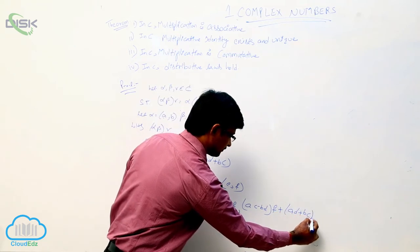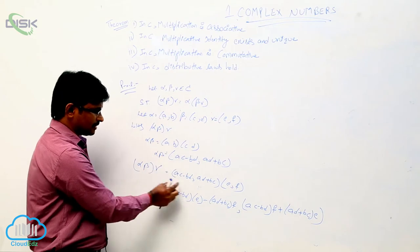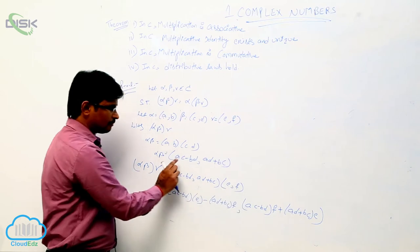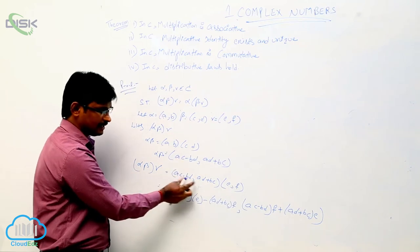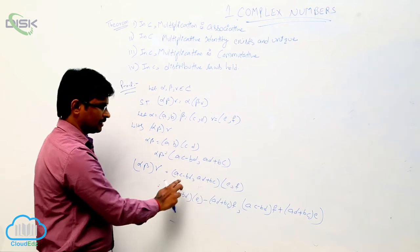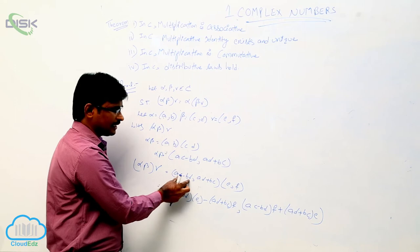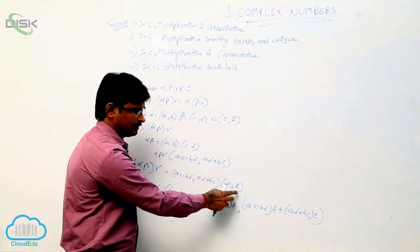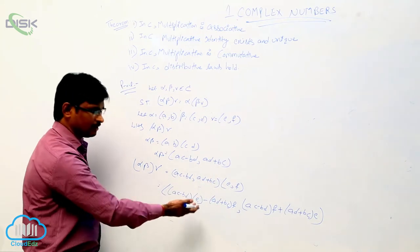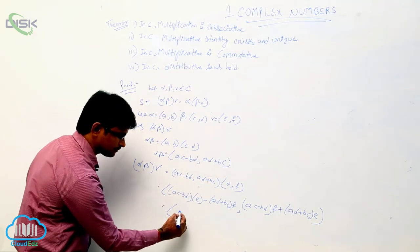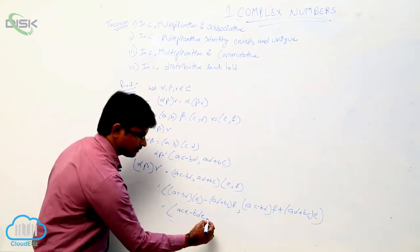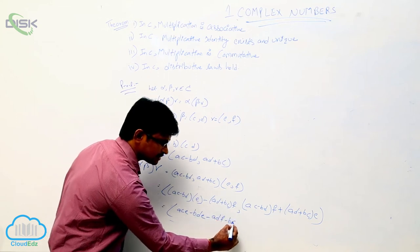Just observe: identifying a, b, c, d terms, we get (ac minus bd) and (ad plus bc). Expanding the multiplication: first component is ace minus bde minus adf minus bcf, and second component is acf minus bdf plus ade plus bce.